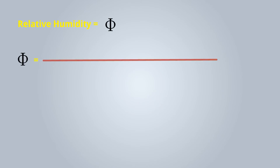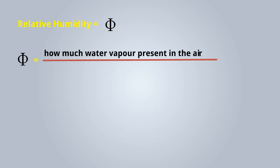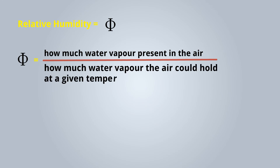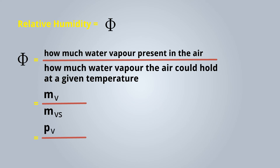The mathematical expression for relative humidity is denoted by φ (phi). φ equals how much water vapor is present in the air divided by how much water vapor the air could hold at a given temperature. Here mv represents the water vapor present in the air and mvs represents the maximum water vapor the air could hold. It can also be written as the ratio of pv (partial pressure of water vapor) to pvs (saturation pressure of water vapor).